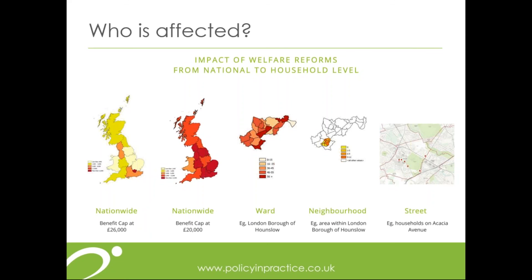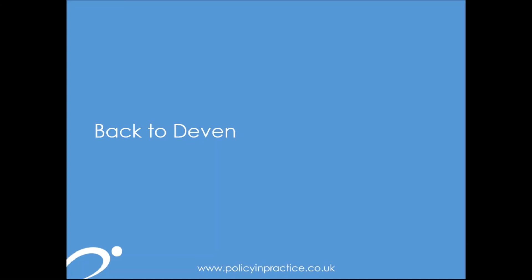We can even go to street level, placing specific households on a map so you can see exactly where they live. You might find a particular street where many people are affected by the cap, and you could send an advisor to that street to talk to people at their homes. So that's it from me — I'll hand back to Devon so he can wrap up the presentation and answer any questions you may have.